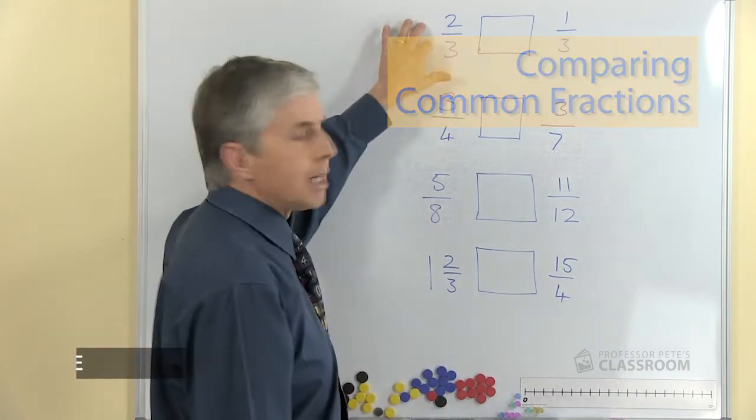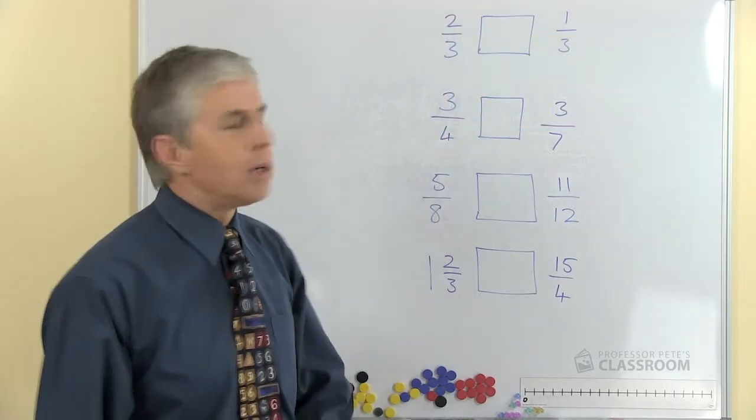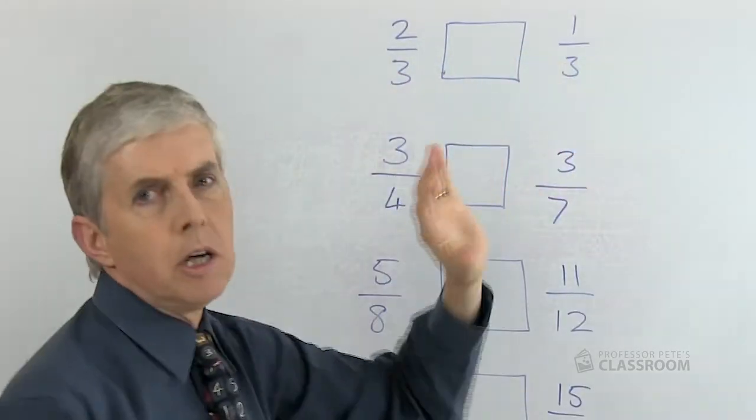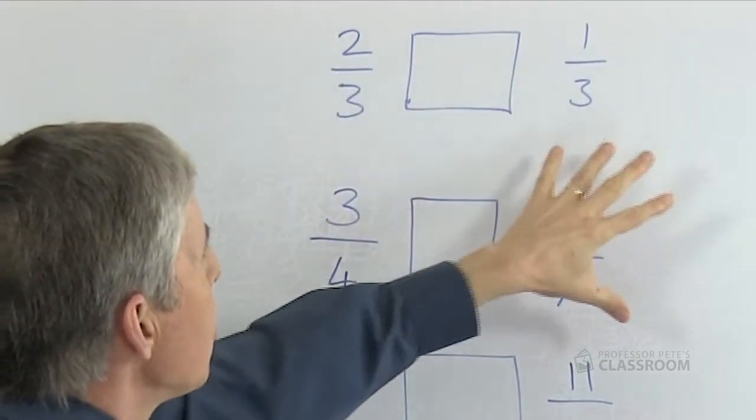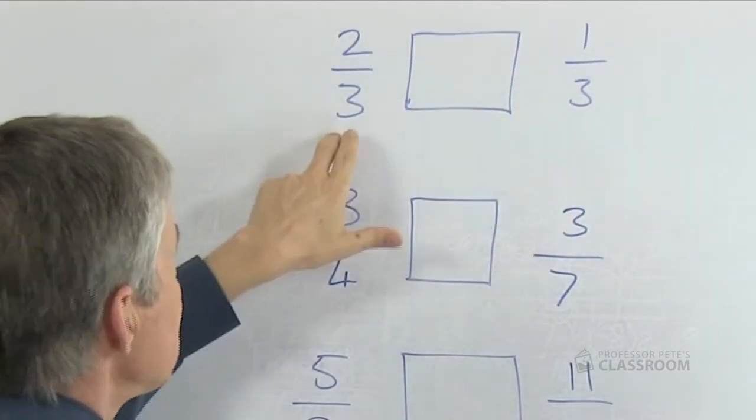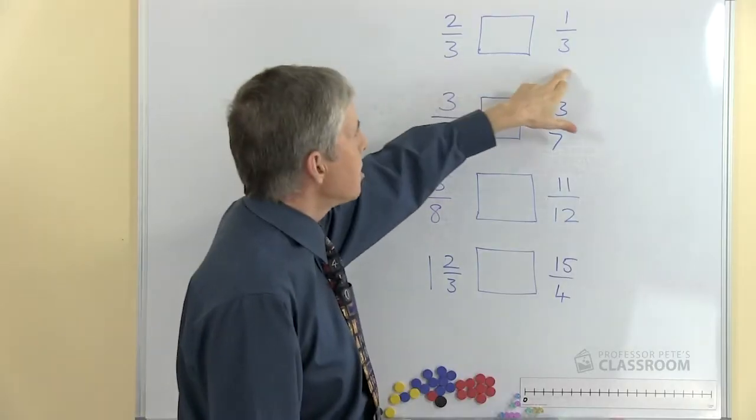Let's look at the top example, this is a nice easy one, two-thirds compared to one-third. You can tell straight away that this one is bigger because they're all thirds. This one on the left is twice as many thirds as that one.